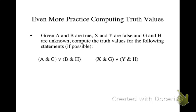One final example. Well, two. Let's compare these two formulas. Given A and B are true, and X and Y are false, and G and H are unknown, we're going to compute the truth values for these statements if we can.